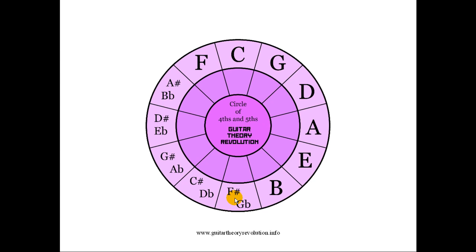What I want you to do is get a blank piece of paper, draw a circle with 12 spokes, and write out the names of the notes around the circle of fifths. After that, draw another circle with 12 spokes, but this time try to visualize the circle of fourths and fifths in your mind and write down the note names not in any specific order — do it randomly. Maybe do the F, then the B, then the G sharp, then the D, then the G.